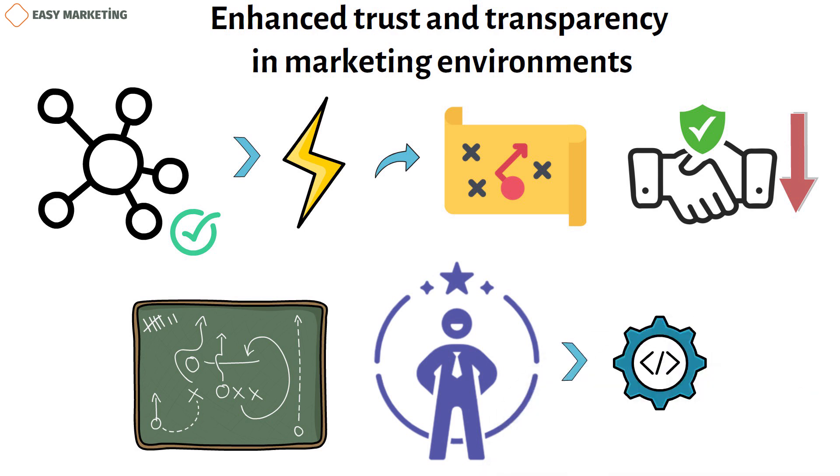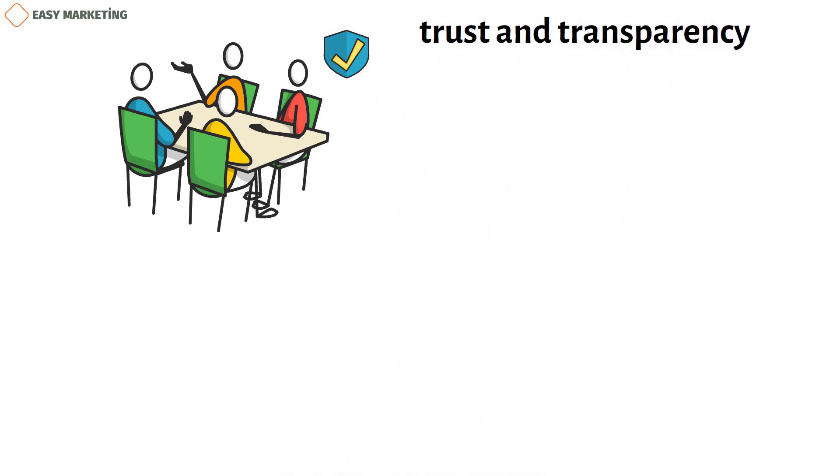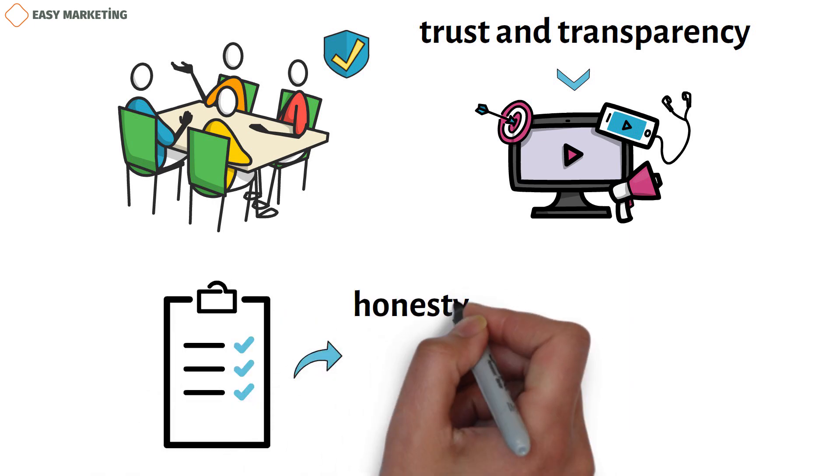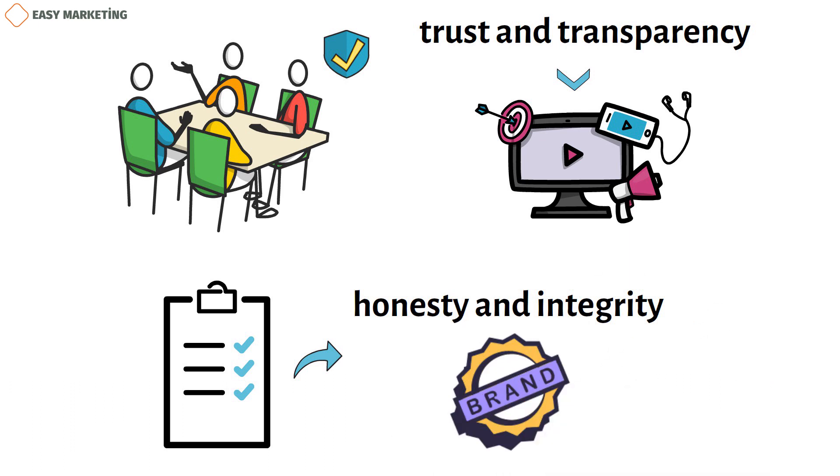By enabling consumers and brands to collaborate in a secure and transparent ecosystem, blockchain can support trust and transparency in the online marketing industry. The benefit of trust by design, which is the most striking feature of blockchain technology, relates to the fact that the trust protocol underpinning it guarantees the honesty and integrity of brand and marketing specialists.